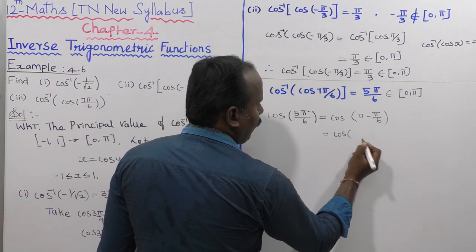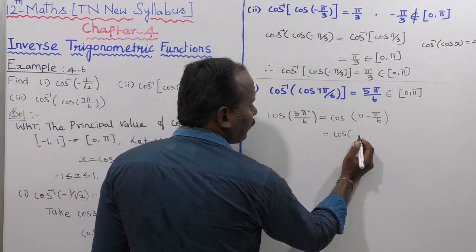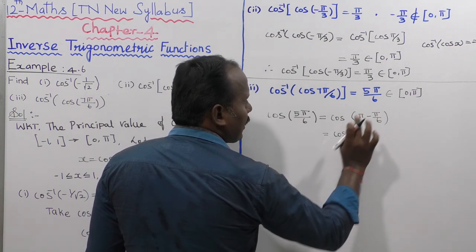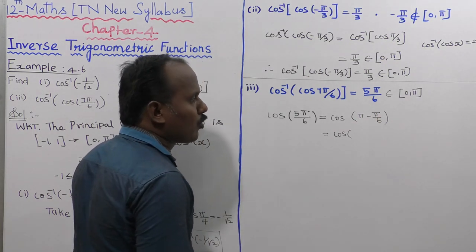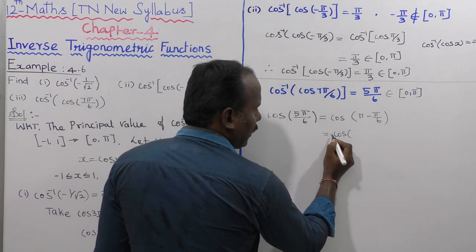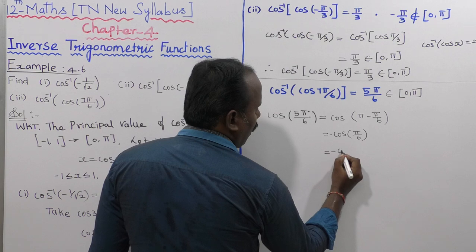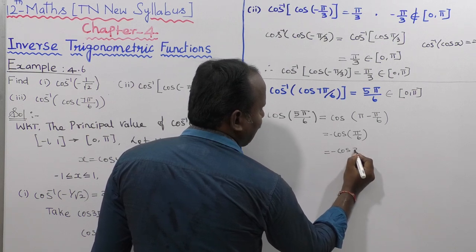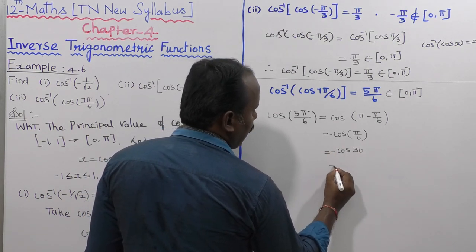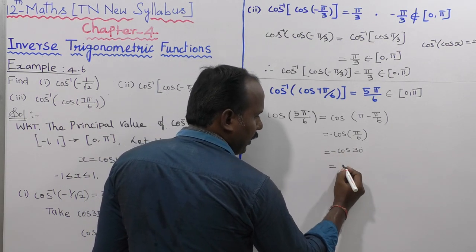Using the identity cos(180° - θ) in the second quadrant gives a definite minus sign. So cos(π - π/6) = -cos(π/6) = -cos(30°), which gives minus root 3 divided by 2.